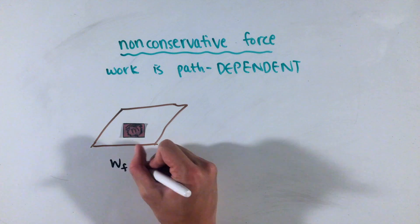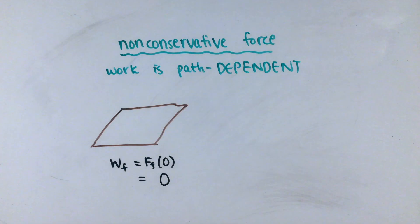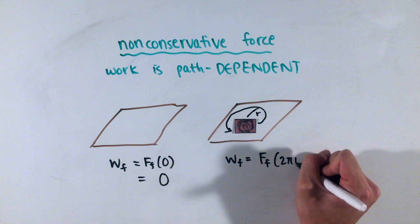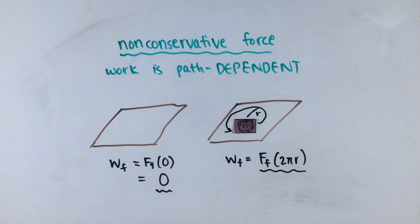So, for an object that sits still, for example, the work done by friction is obviously zero. However, this same object pushed along a circle, which ends at the same starting position, will still experience a work done by friction equal to the force times the circumference of this circle, or the distance of the path, which is not equal to zero.